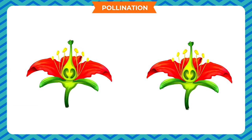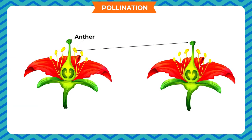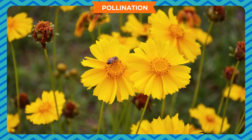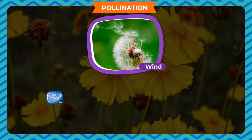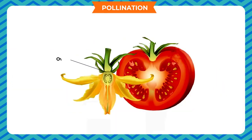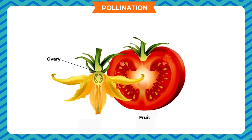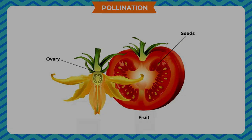Pollination is the process in which pollen grains are transferred from the anther to the stigma of either the same flower or another flower of the same kind, by wind, water, or insects. After pollination, the ovary swells up and changes into a fruit, and the ovules change into seeds.